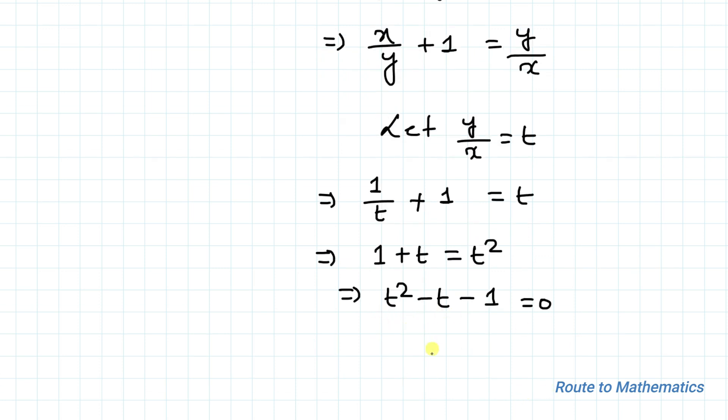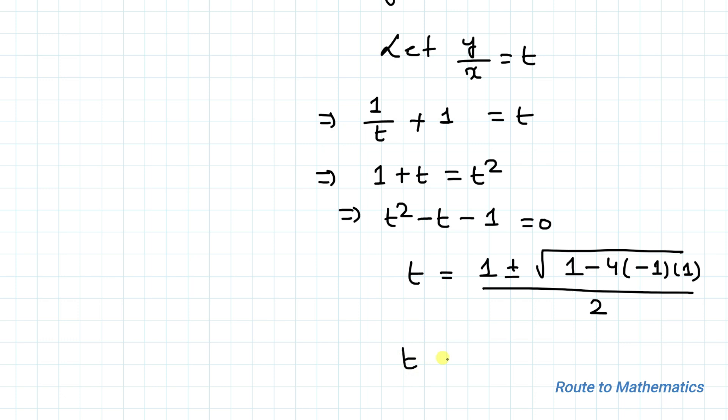We have a quadratic equation, so we will apply the quadratic formula. That is t = [1 ± √(1 - 4(-1)(1))]/2. This implies t = (1 ± √5)/2.